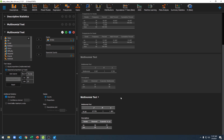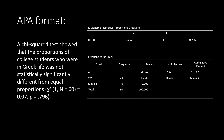Now it's time to write all this up in APA format. We need to take information from our tables and write a sentence conveying that information: our chi-squared value, degrees of freedom, p-value, and total sample size. Since the p-value for Greek life was not significant, my sentence states that the proportions were not statistically significantly different from equal. I include the chi-squared symbol, degrees of freedom and total sample size in parentheses, the chi-squared value, and the p-value.